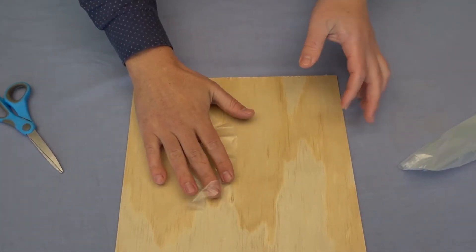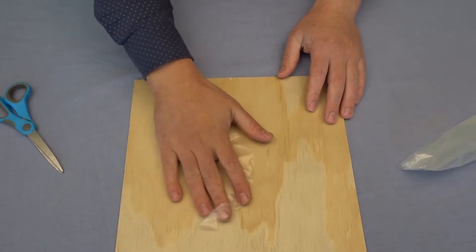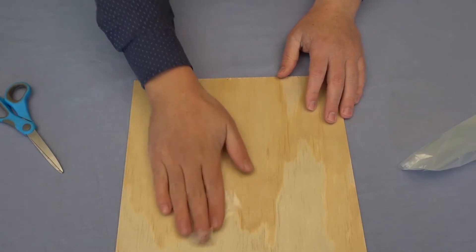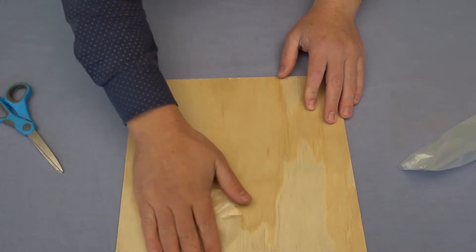To do this I'm just going to rub it back and forth on the board. Now you don't need to press down really hard. This isn't about friction. I'm going to talk about the science later, but you just gently rub it around on the board getting as much contact as you can.